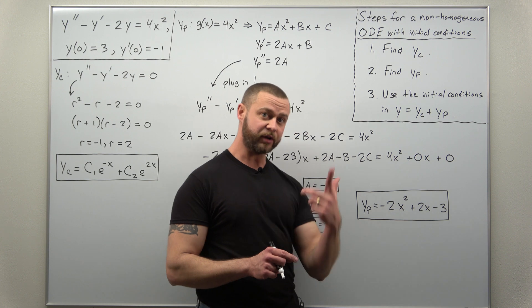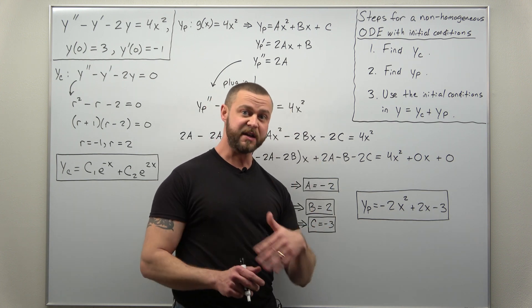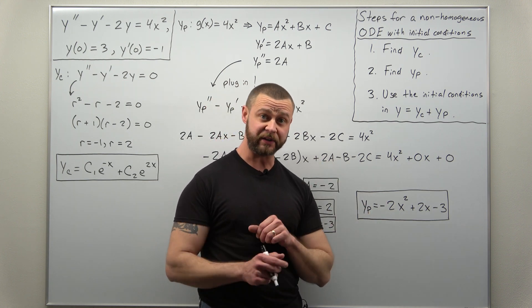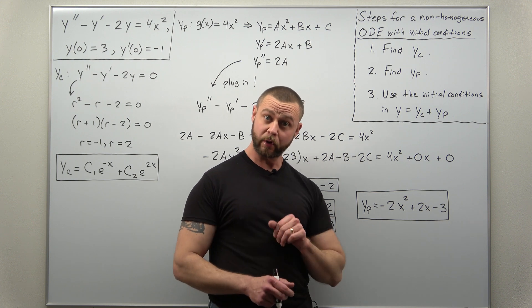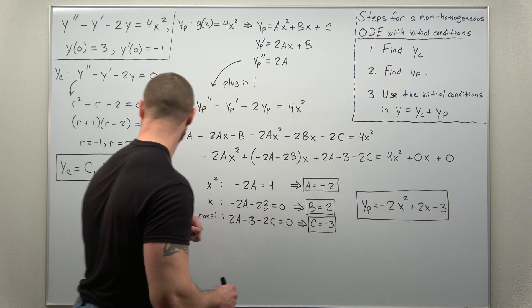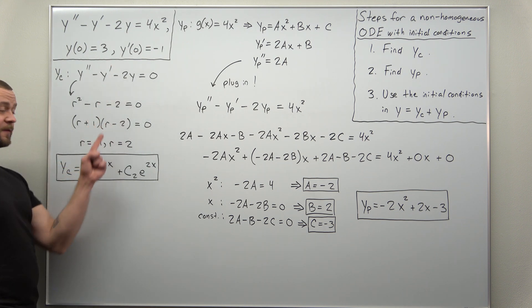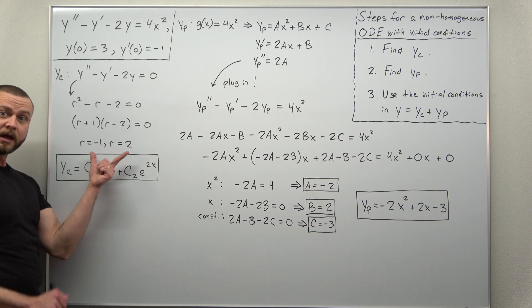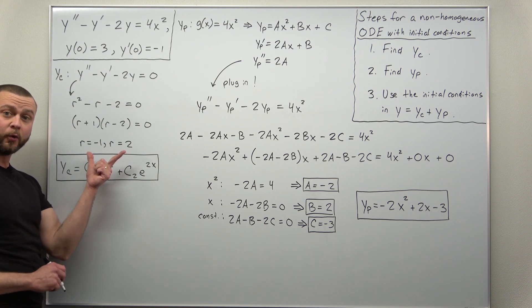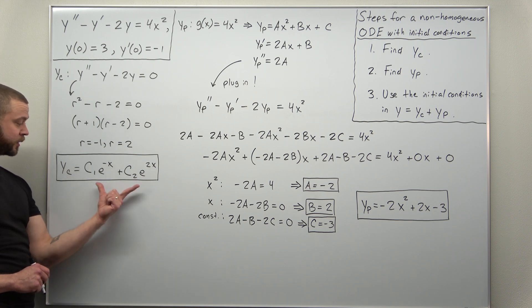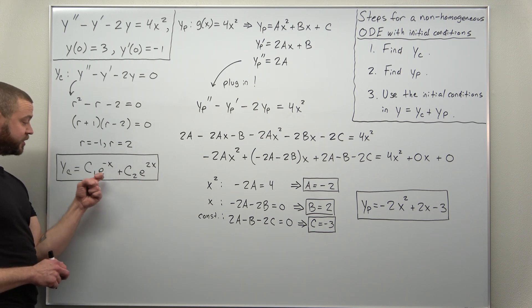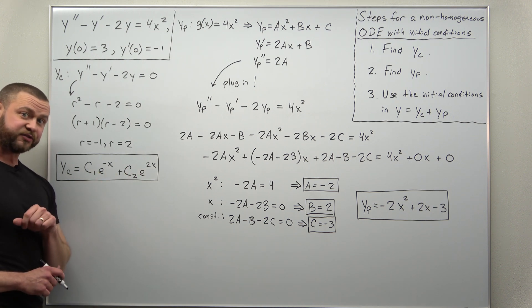All right, now some of the work is already on the board. This is all the stuff that we went through in the previous examples. So we'll just outline that very quickly here. So finding the complementary solution should be very straightforward, convert to your characteristic equation. And for this example, you'll get two distinct real roots, negative one and two. So you get your complementary solution, a linear combination of E to the negative X and E to the 2X.